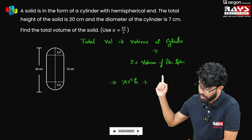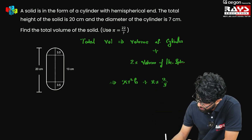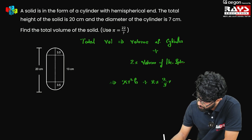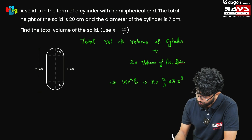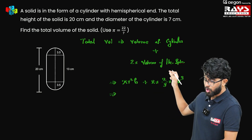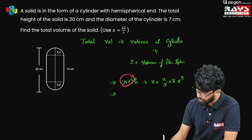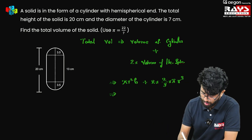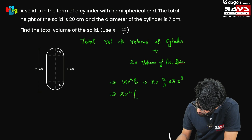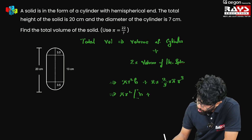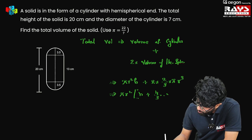The volume of a hemisphere is two by three π r³. So two into two by three π r³. Now let's take π r² common because π r² is common in both terms. We will get π r² into (h + two into two by three), which is four by three, into r. So the combined expression is π r² (h + 4/3 r).